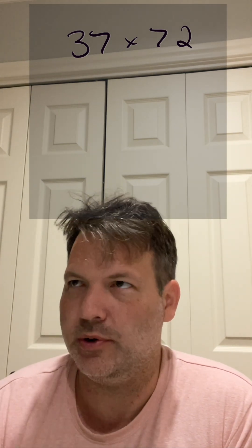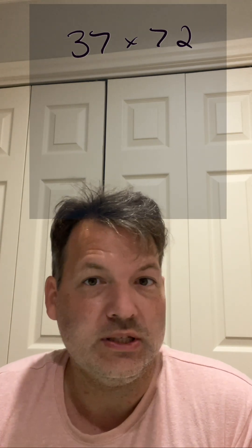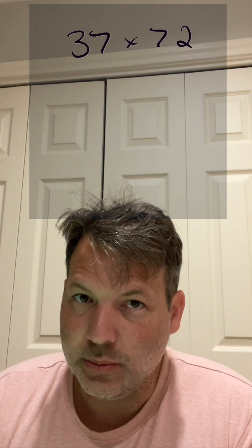37 is a prime number, so there are no special factoring patterns there. One is odd, one is even, so we can't use like the equidistant number trick.